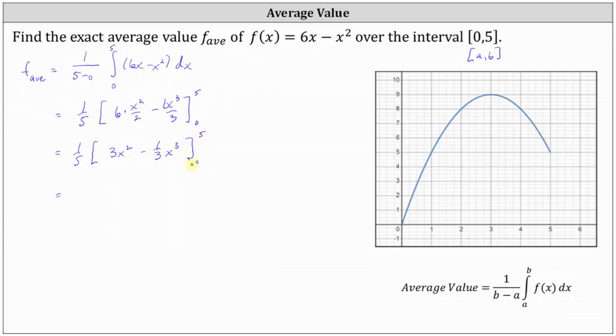And now we determine big F of 5 minus big F of 0, which gives us 1 5th times the quantity. Big F of 5 is 3 times the square of 5 minus 1 3rd times the cube of 5, minus big F of 0.